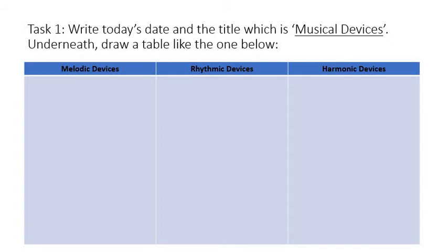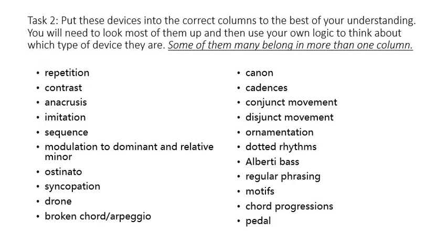Hopefully you've created your nice neat table now. On the next slide there's going to be a series of musical devices. What I'd like you to do is look at these devices and put them into the correct columns in your table to the best of your understanding. You'll probably need to look most of them up, and you've got the bulk of the lesson to do this. Use your own logic to decide whether something is a melodic, rhythmic or harmonic device. Note that some of them belong in more than one column.